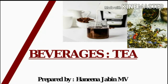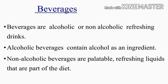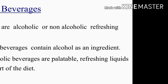Hello everyone, here I am going to talk on the topic tea, one of the beverages. Let us first look at beverages. Beverages are of two types: alcoholic and non-alcoholic. Alcoholic beverages contain alcohol as an ingredient, which are prepared from cereals and fruits. Non-alcoholic beverages are refreshing liquids that are part of the diet, which are prepared from seeds like coffee, cocoa, and leaves like tea. Here we have to study on tea, which is a non-alcoholic beverage.